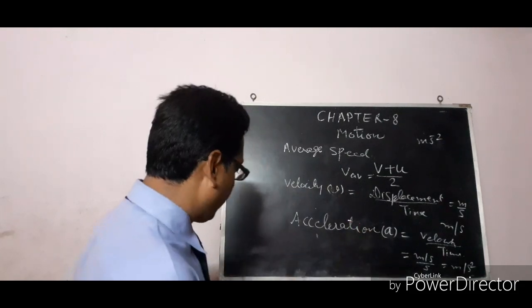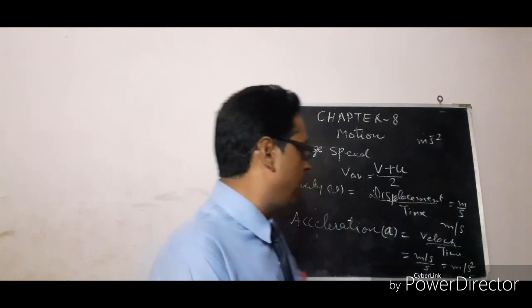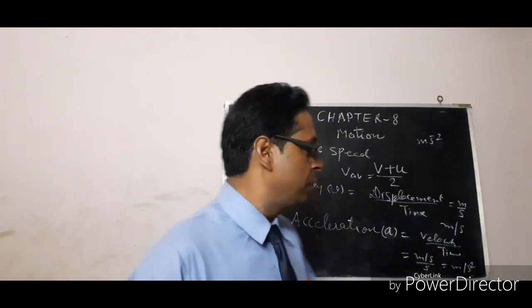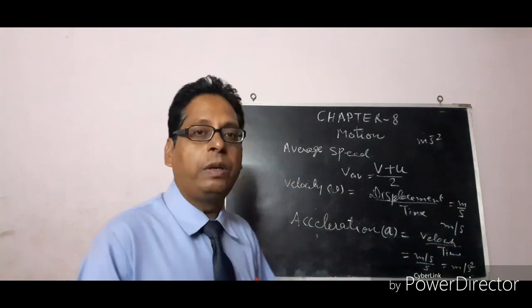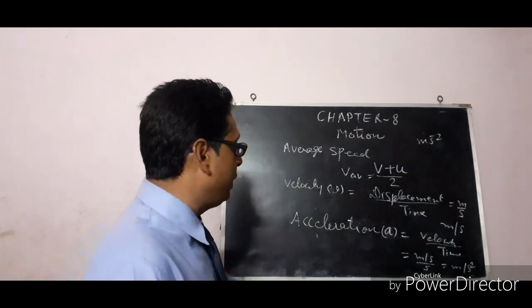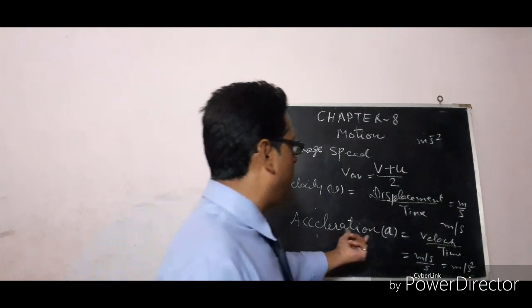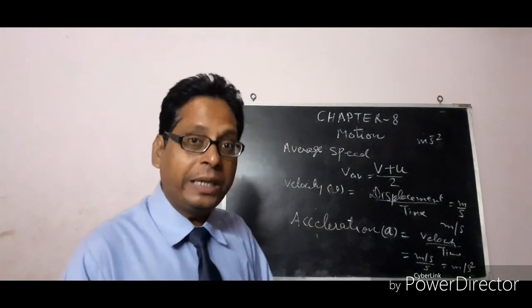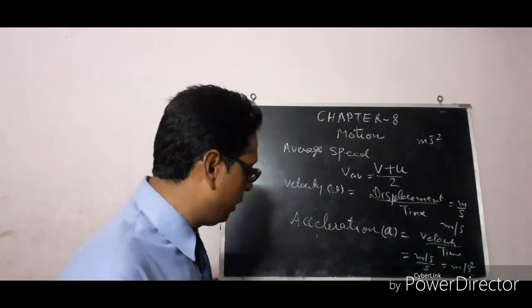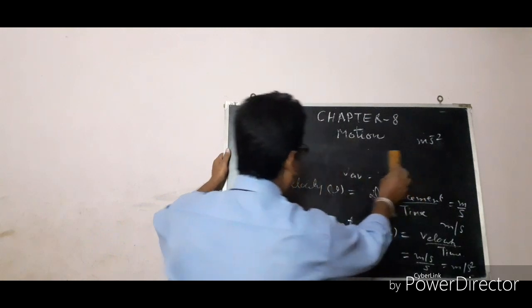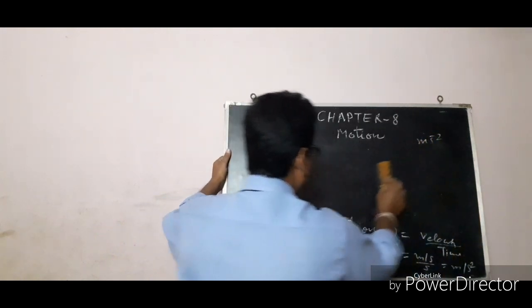Since velocity is a vector quantity, acceleration is also a vector quantity. If an object is moving and its velocity is decreasing, the value of acceleration will be negative. In that case we say the object is decelerating, which is called retardation.